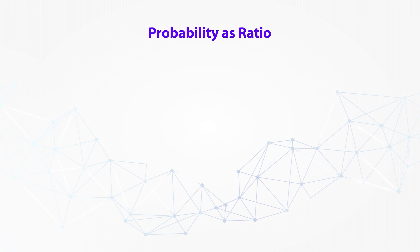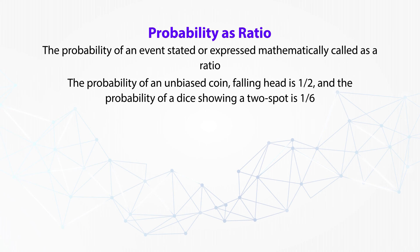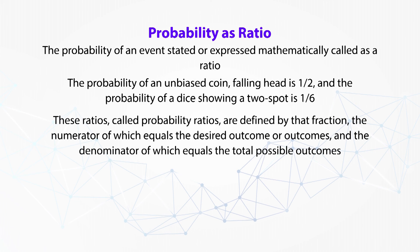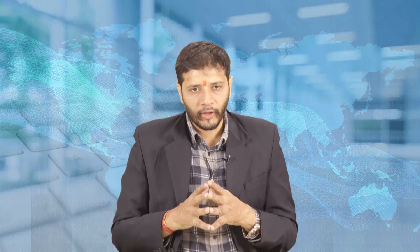Probability as a ratio: the probability of an event is expressed mathematically as a ratio. The probability of an unbiased coin falling a head is 1/2, and the probability of a die showing a 2-spot is 1/6. These probability ratios are defined by a fraction where the numerator equals the desired outcome and the denominator equals the total possible outcomes. The probability of appearance of any face on a 6-faced die is 1/6, or probability equals desired outcomes divided by total number of outcomes. Probability is a number that ranges from 0 to 1 — 0 for an event which cannot occur, and 1 for an event that is certain to occur.